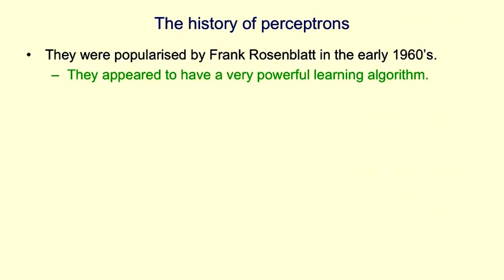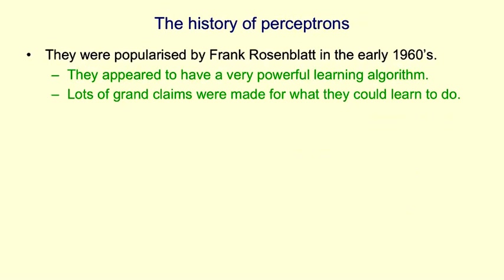Perceptrons have an interesting history. They were popularised in the early 1960s by Frank Rosenblatt, who wrote a big book called Principles of Neurodynamics, describing many different kinds of perceptrons. That book was full of ideas. The most important thing in it was a very powerful learning algorithm — or something that appeared to be a very powerful learning algorithm. A lot of grand claims were made for what perceptrons could do using this learning algorithm.